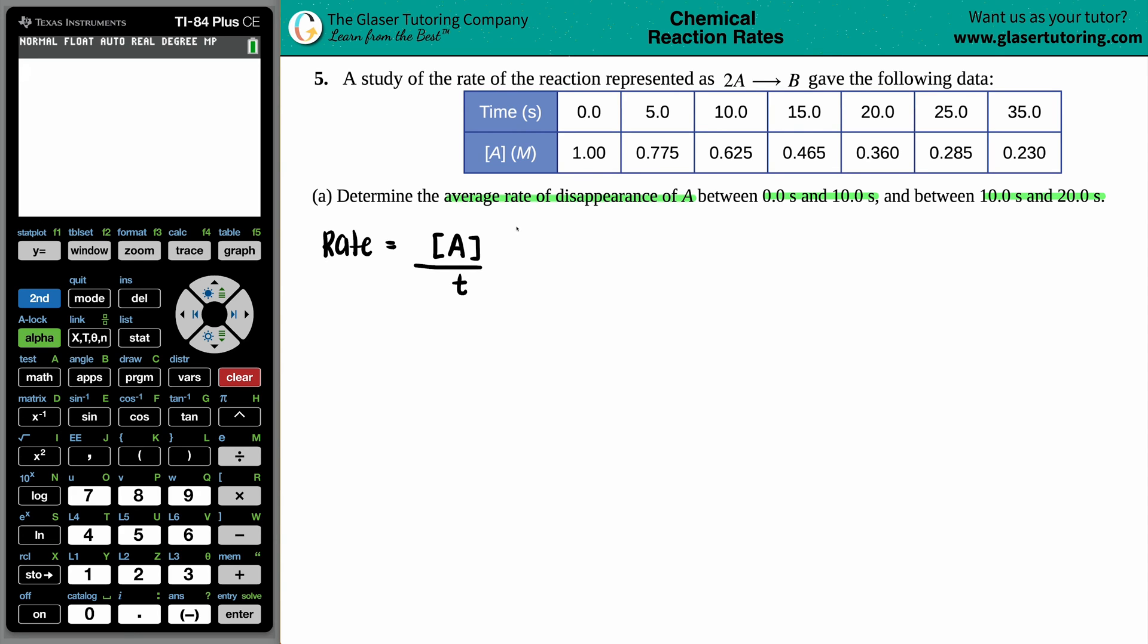It's the change in concentration - as time is going on, that A value is changing. We usually use delta for change - that little triangle means change. If A is changing and I'm going through time, technically the time is changing as well. So it's a change in concentration over a change in time, and that's the general unit for a rate.